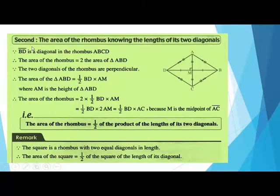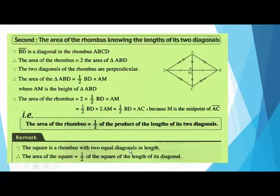The second rule to find the area of a rhombus: knowing the lengths of its two diagonals. The area of a rhombus using the diagonals equals half times the product of the two diagonals. Note that the square is a rhombus with two equal diagonals, so the area of a square also equals half times the diagonal times the diagonal.